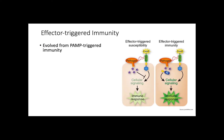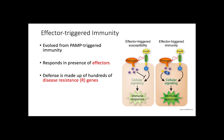The second type of immune response is effector-triggered immunity. This type of immunity actually evolved from PAMP-triggered immunity, as pathogens encounter ways to overcome PAMP responses by delivering effectors. Effectors are pathogen-encoded proteins that cripple the plant's innate immune system once they're delivered into cells. Because there are thousands of effectors, this plant defense is typically made of hundreds of disease-resistant genes, or R genes.